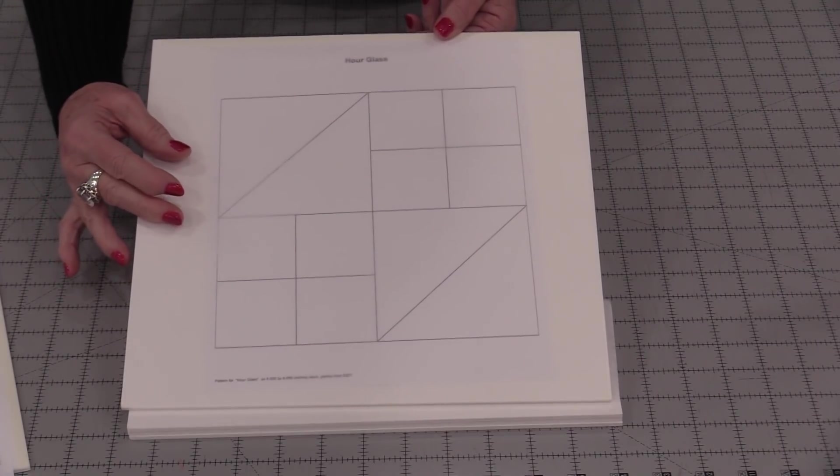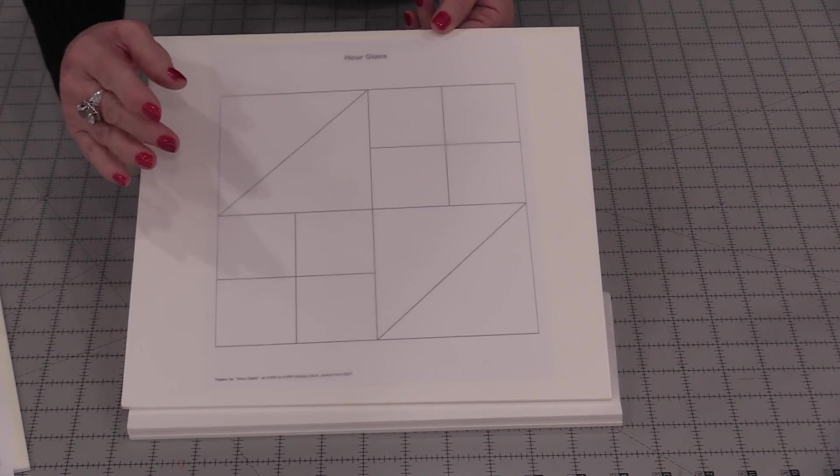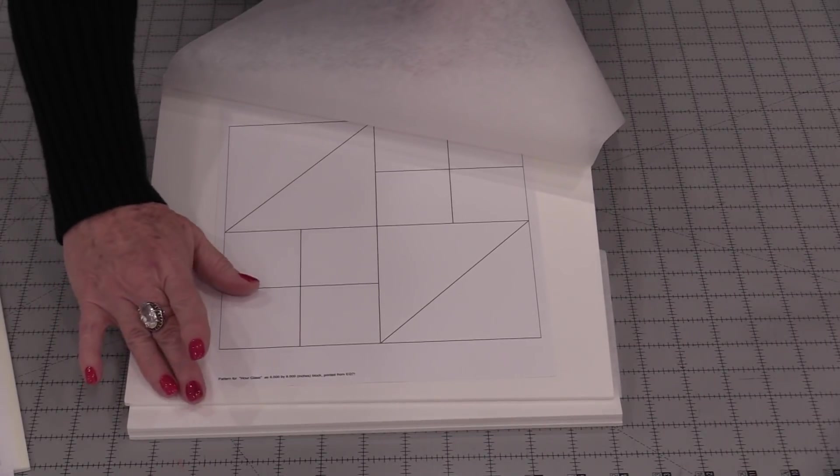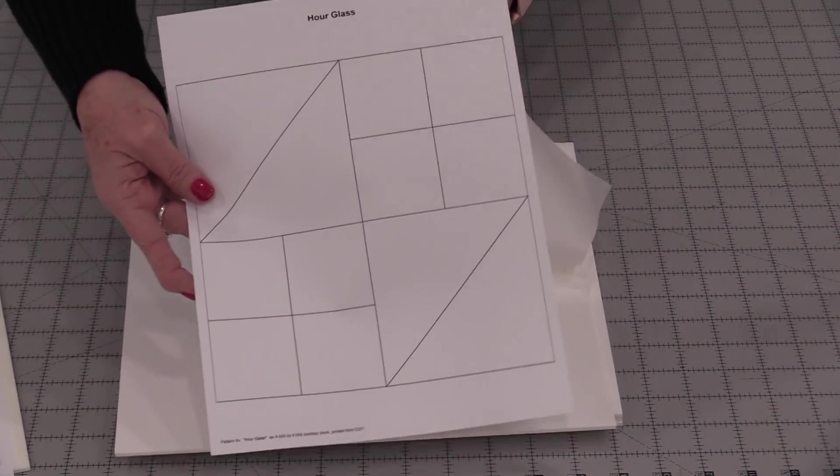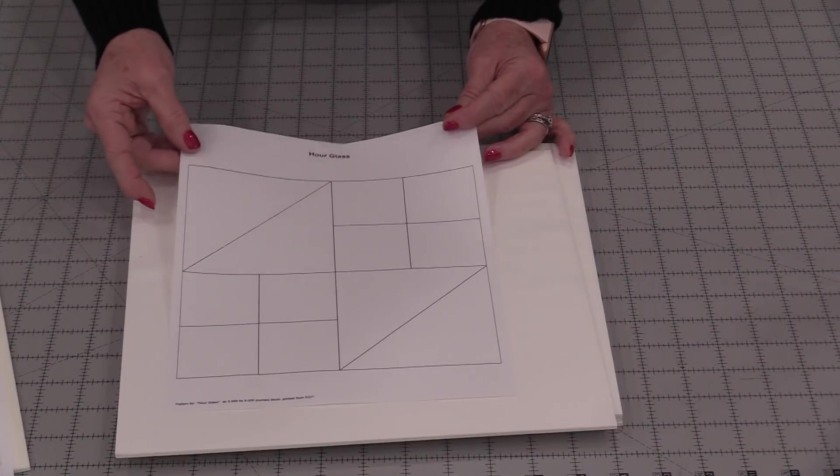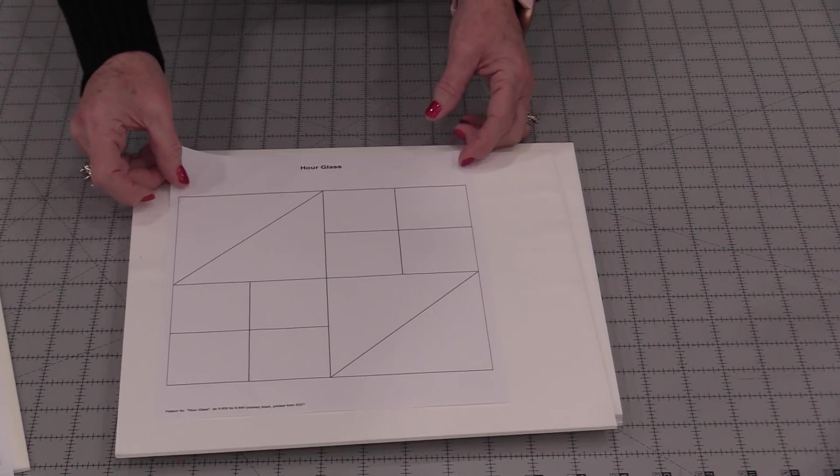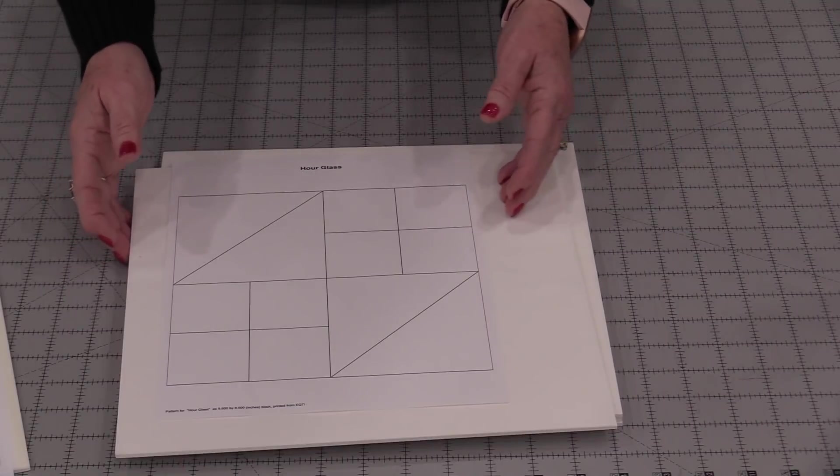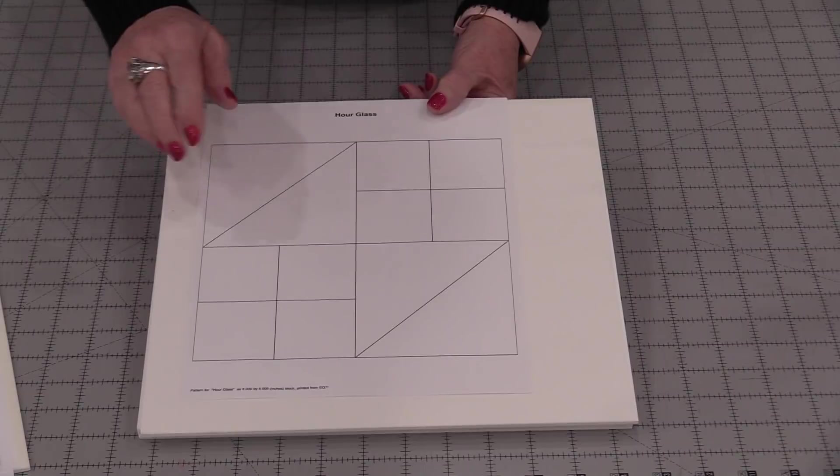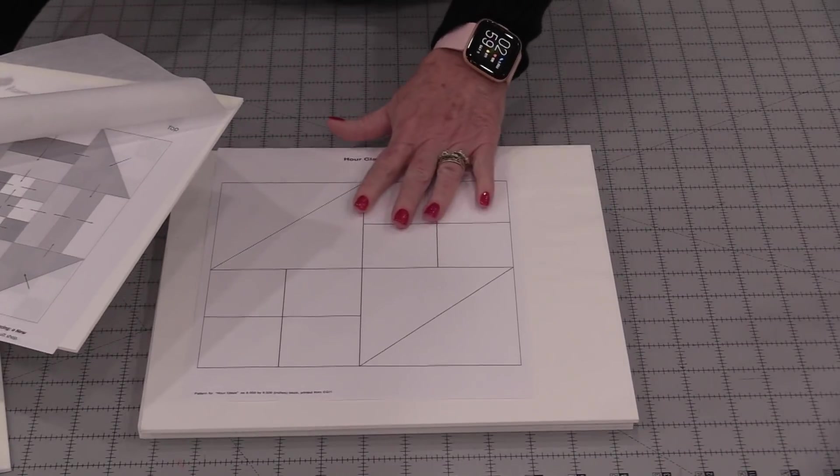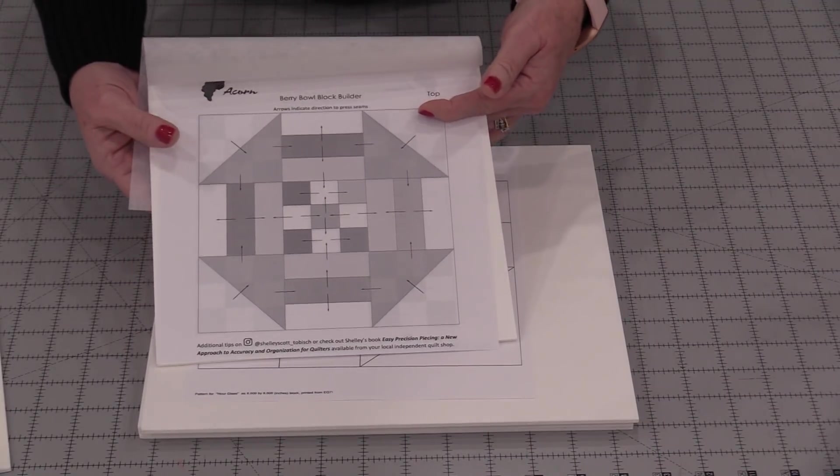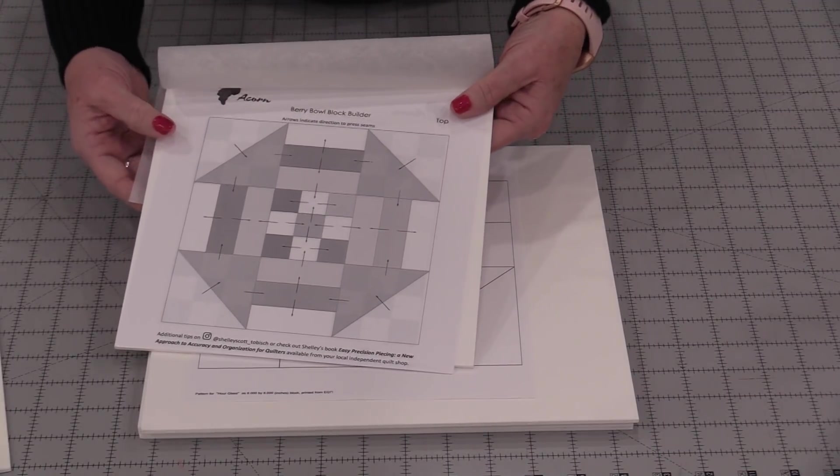I'm going to be making an hourglass block and I'm going to make four blocks, but I'm going to use this block builder to help me stay organized. The first thing I need to do is have a layout of my block. You can hand draw the block or have it printed out. Print it out from your pattern and blow it up. Any way that you can get your block is fine. With this block I want to take this drawing of the block and I want to mark it with some marks to help me stay organized.